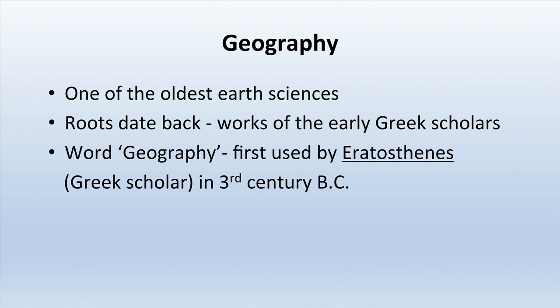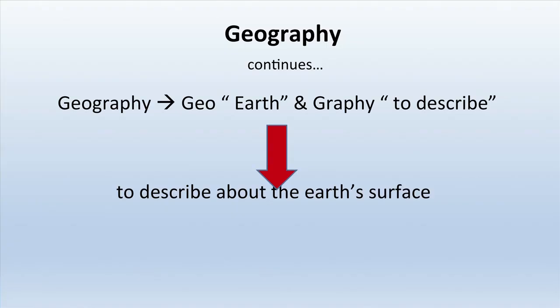So what is geography? Basically, geography is one of the oldest earth sciences and its roots date back to the works of early Greek geographers. The word geography was first used by Eratosthenes, who himself was a Greek scholar in the third century BC. Geography is composed of two words: 'geo' meaning earth, and 'graphi' meaning to describe.